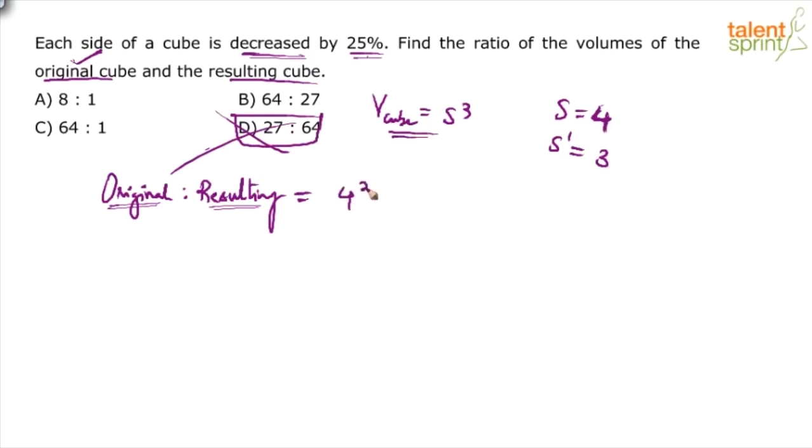So 4 cubed is to 3 cubed, that's your answer. 64 is to 27, and you have to mark the answer to this question in 0 seconds.